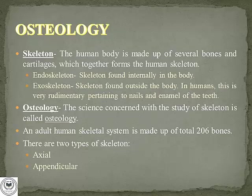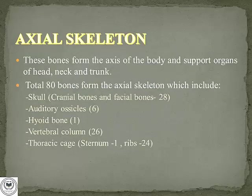The 206 bones are further classified into two types of skeleton: axial and appendicular. Speaking about the axial skeleton, these bones form the axis of the body and support organs of the head, neck, and trunk. A total of 80 bones form the entire axial skeleton.